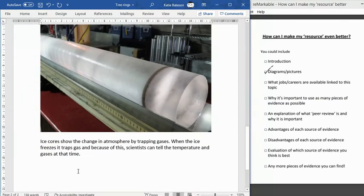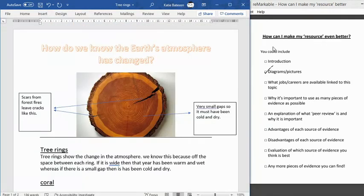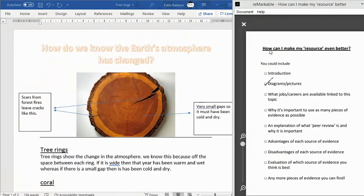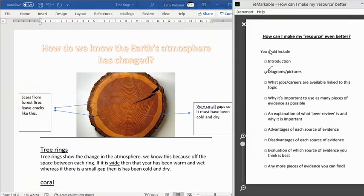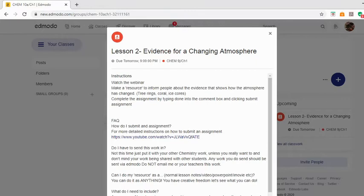So what I could do here is actually type that out underneath just to show where I got that picture from. A nice little description of how this source of evidence is used. So a lovely breakdown there of the different sources of evidence. How could they make it even better? I think even better for this one would be the advantages and disadvantages of each source of evidence. All the examples that we've seen there, they clearly watched the webinar and they did all make a resource to inform people about the evidence that shows how the atmosphere has changed. So all of them have successfully completed the original task and some of them have even completed higher level tasks that I suggested in the even better if document.